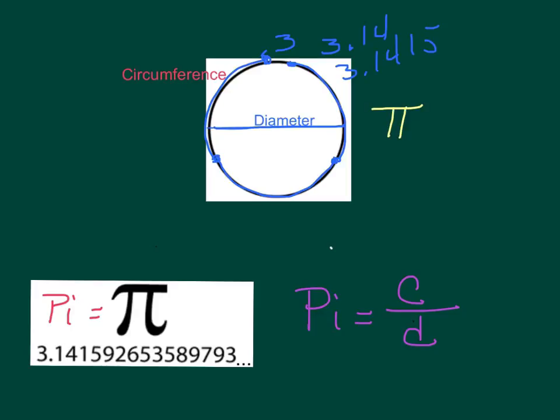So pi is your circumference of your circle. You can remember this is your circumference because it looks like it's a C divided by its diameter.